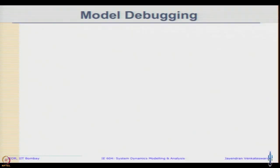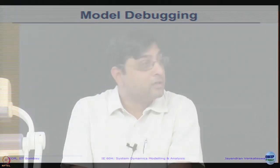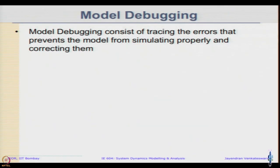We will start with a few basic steps and look at how to validate the model. The first step is model debugging. We already had an introduction to this in a previous class, where we looked at a model description and tried to uncover the various errors within the model. Debugging the model consists of tracing the errors that prevent the model from simulating properly and correcting them.